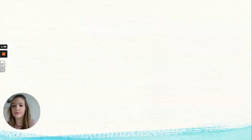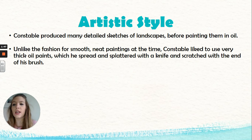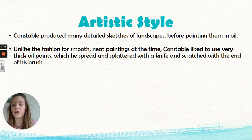Now let's look at his artistic style. Constable produced many detailed sketches of landscapes before painting them in oil. Unlike the fashion at the time where smooth and neat paintings were popular, Constable liked to use very thick oil paints which he spread and splattered with a knife and then scratched with the end of his brush. It was a very unusual technique that not many others had done or tried before.